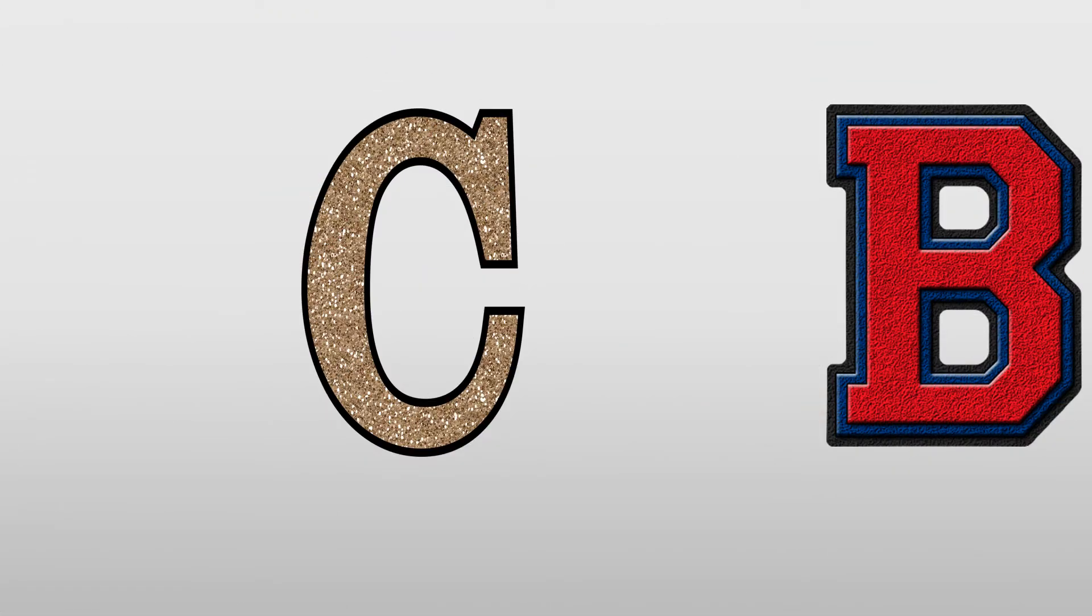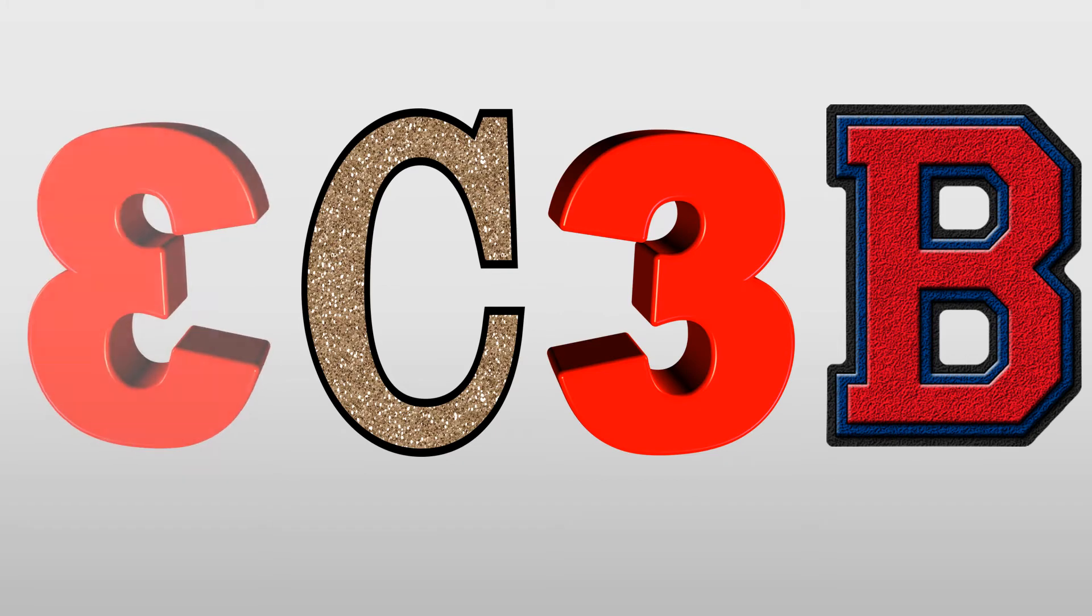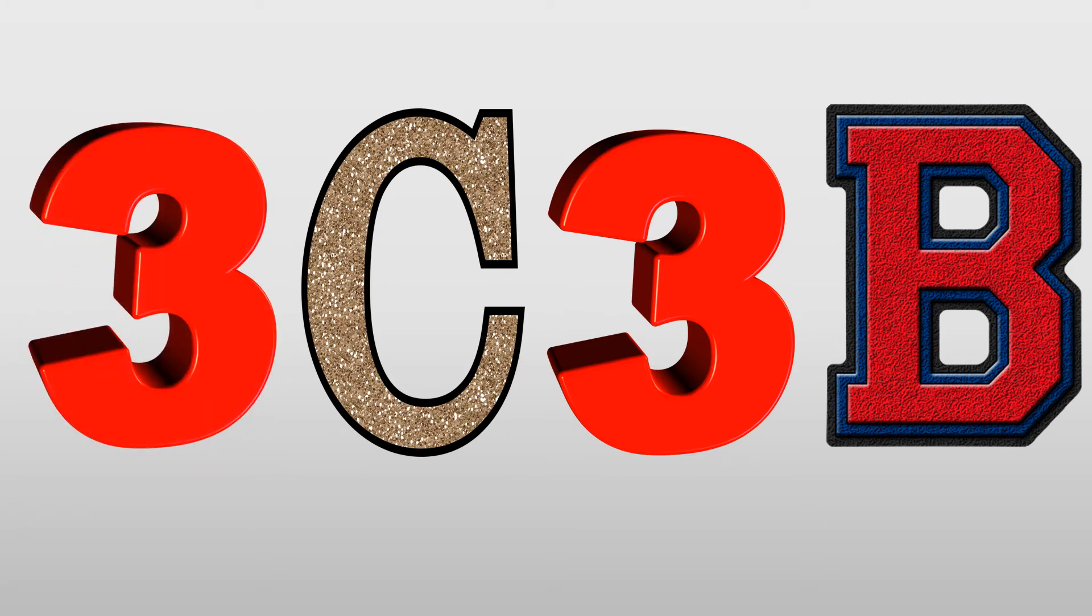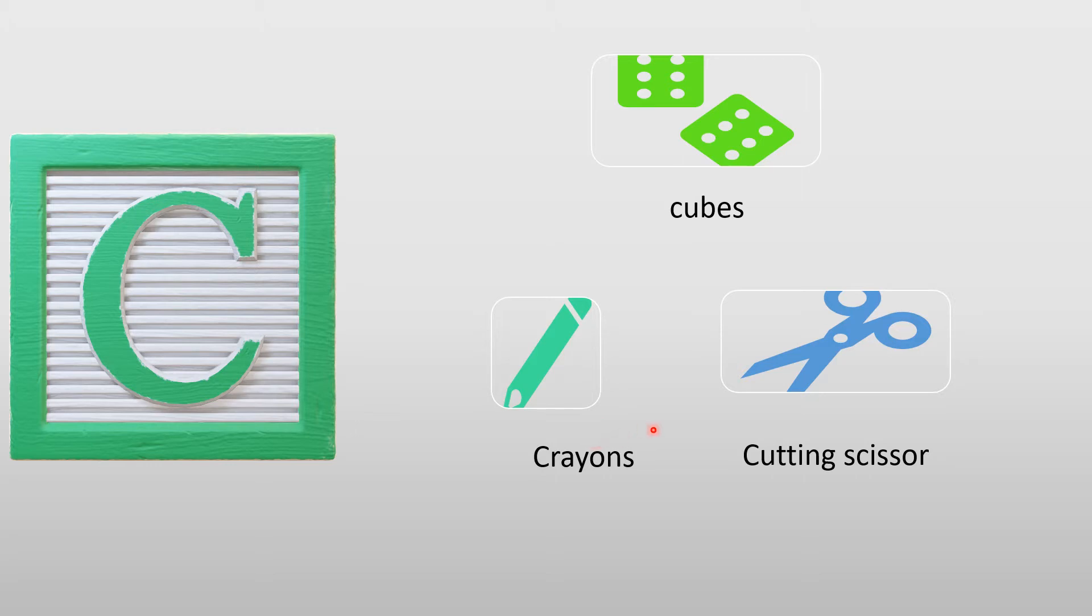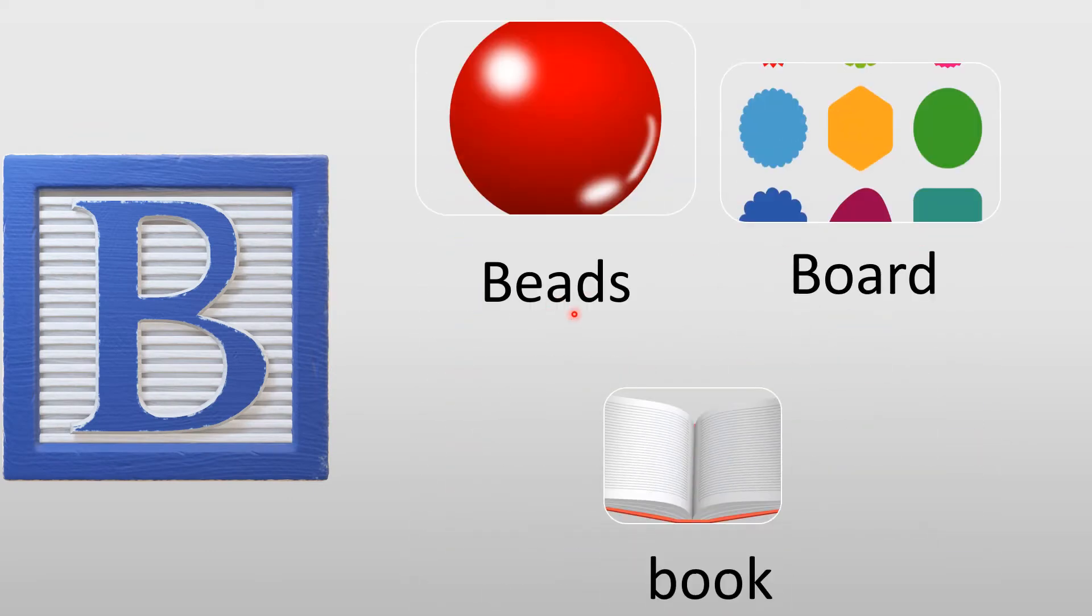So basically it is very easy. You must remember 3C and 3B. What are the 3C? What are the 3B? In the subsequent video I will explain to you what are they. For the C, there are 3 things: Cubes, Crayons, Cutting scissors. How easy it is. For the B, there are also 3: Beads, Board, and Book.